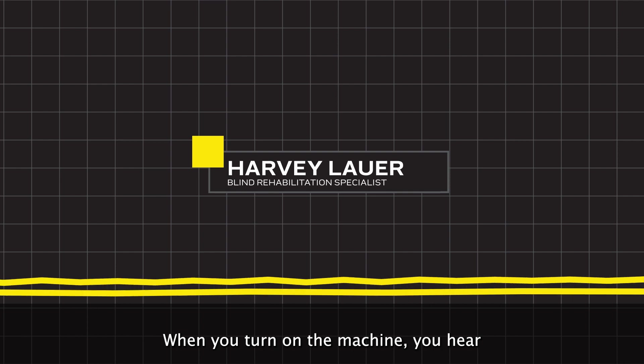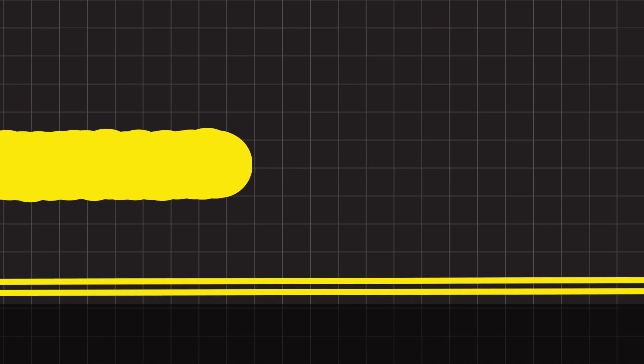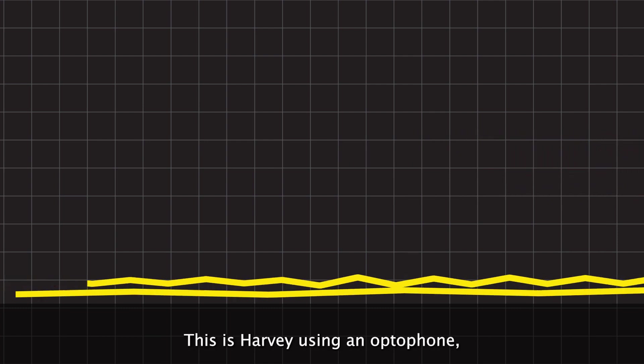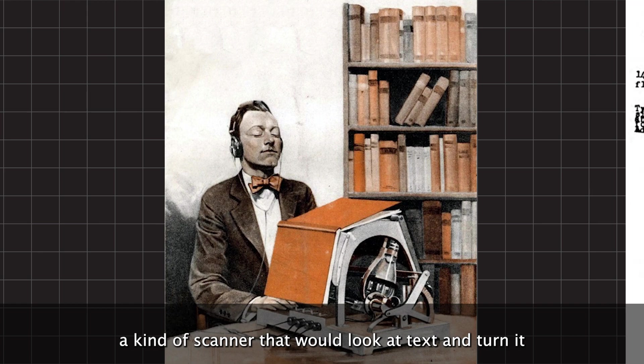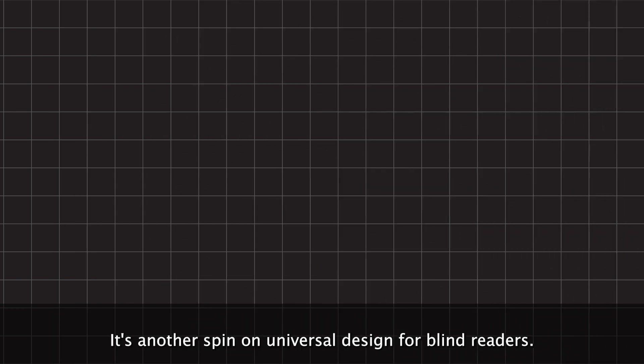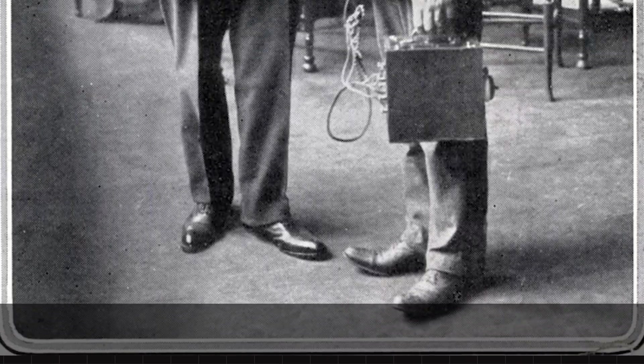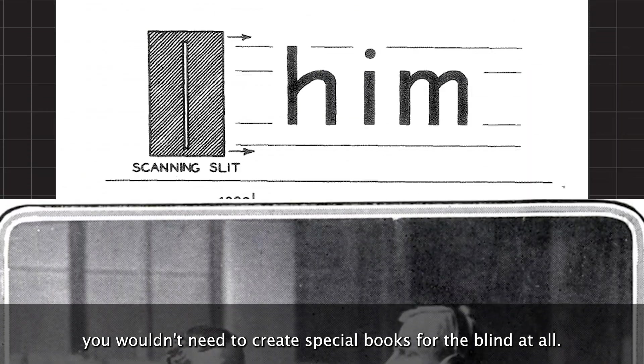When you turn on the machine, you hear all the sounds in the earphone. This is Harvey using an optiphone, a kind of scanner that would look at text and turn it into a series of tones representing the shapes of the letters. It's another spin on universal design for blind readers. With an optiphone, you wouldn't need to create special books for the blind at all.